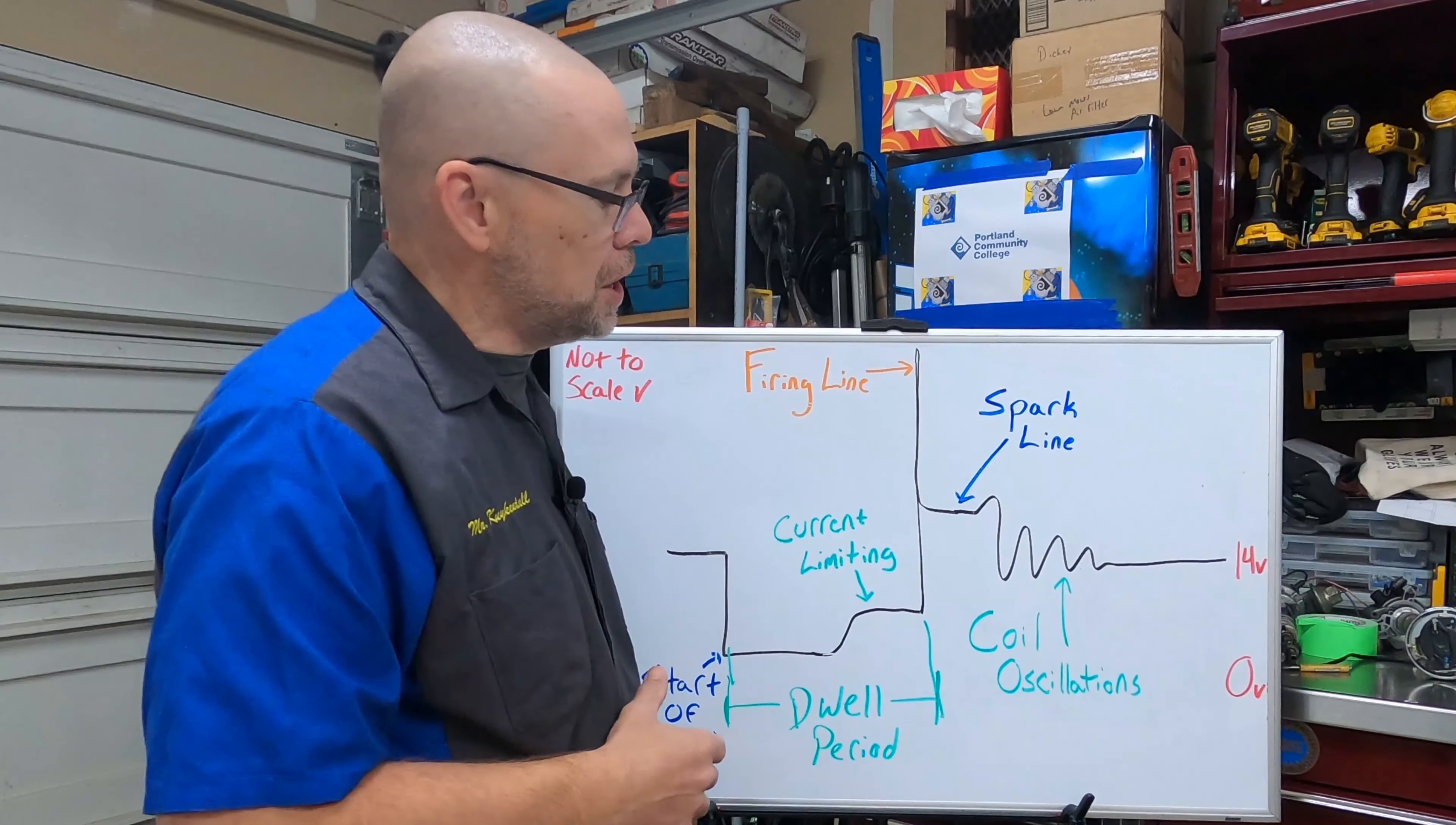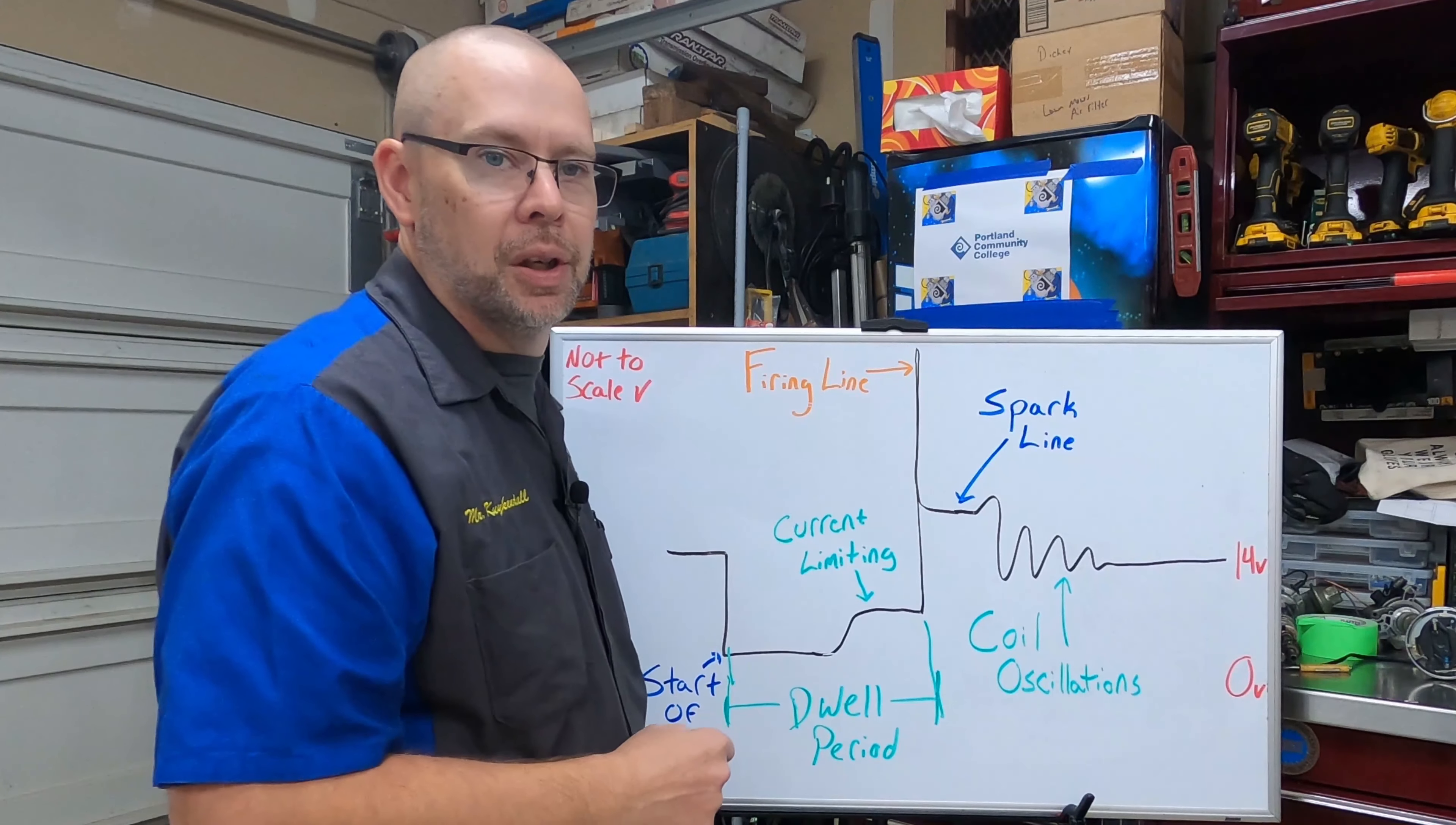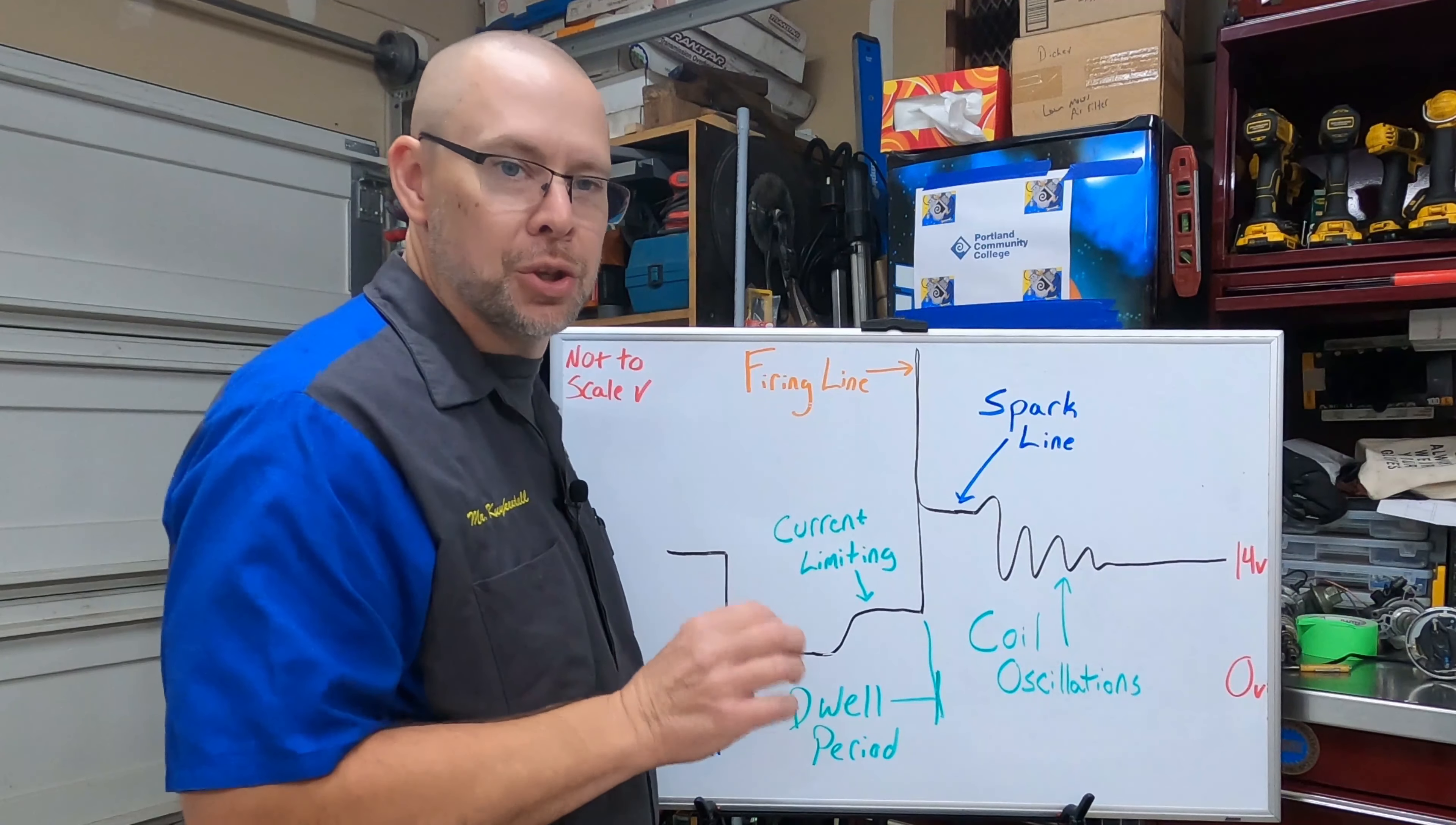And then at the end we have coil oscillations. Now old rule of thumb was you needed a minimum of two to three coil oscillations, but some systems are built so they'll have a minimum number, but we want to see some oscillations back here. As long as we got something going on back there that tells us that we had energy left over.